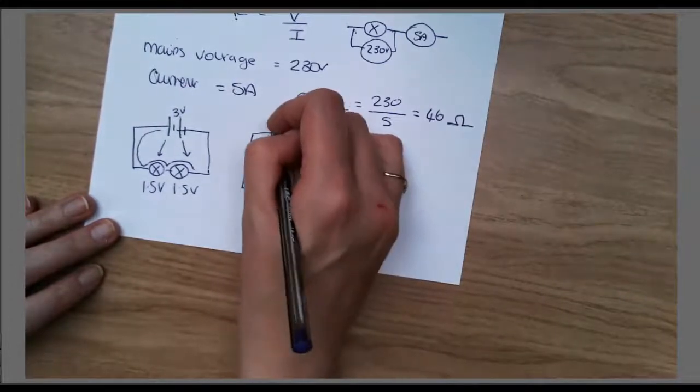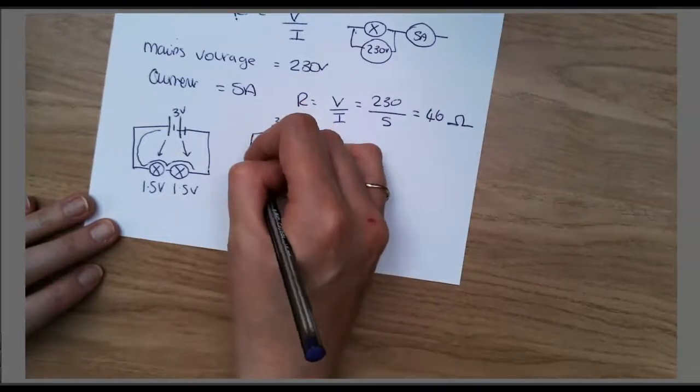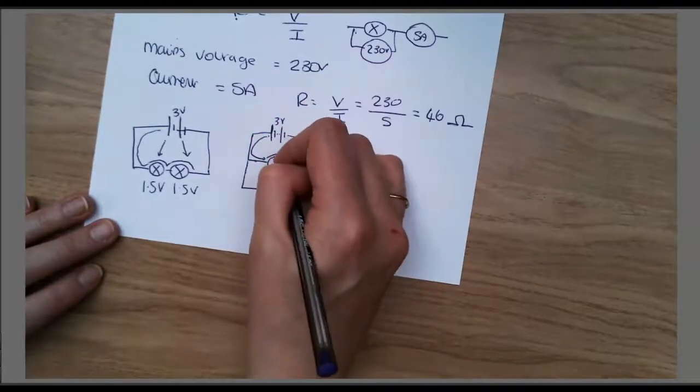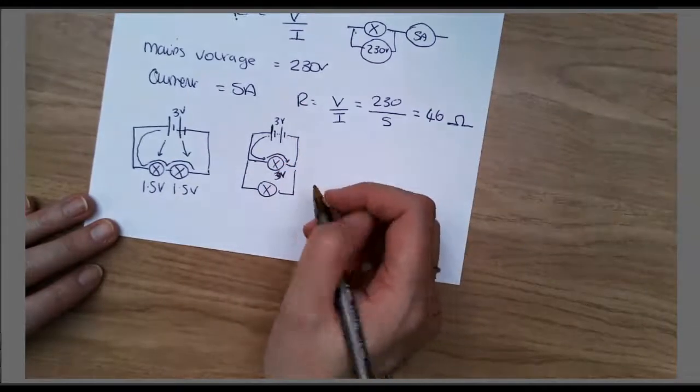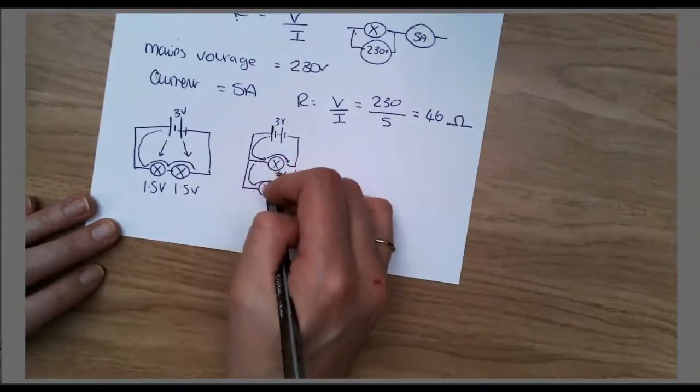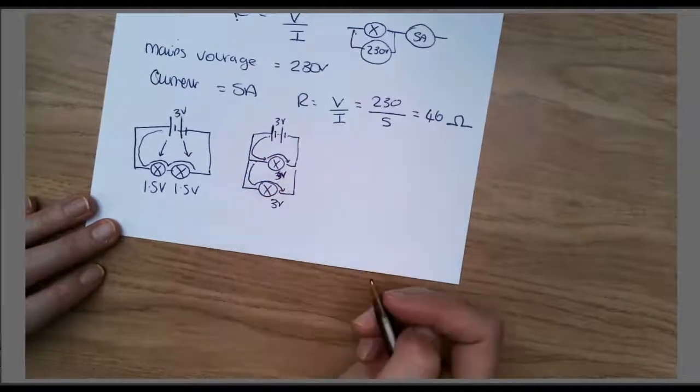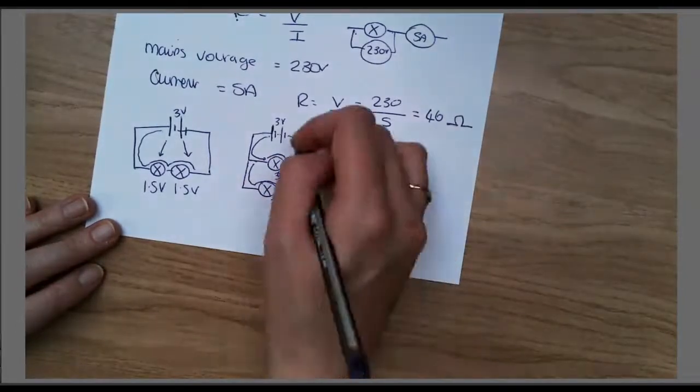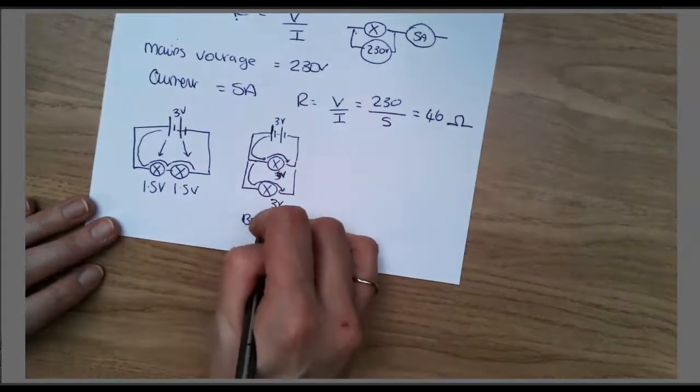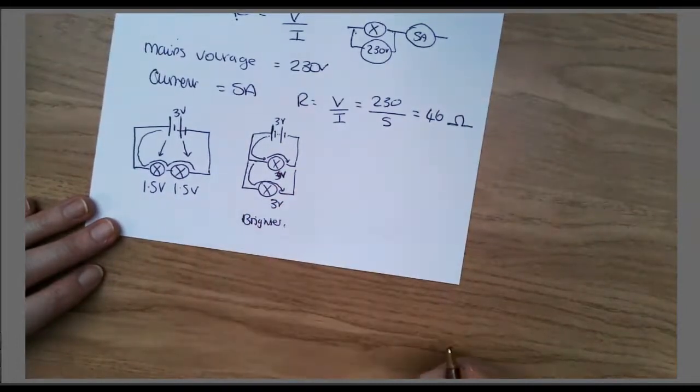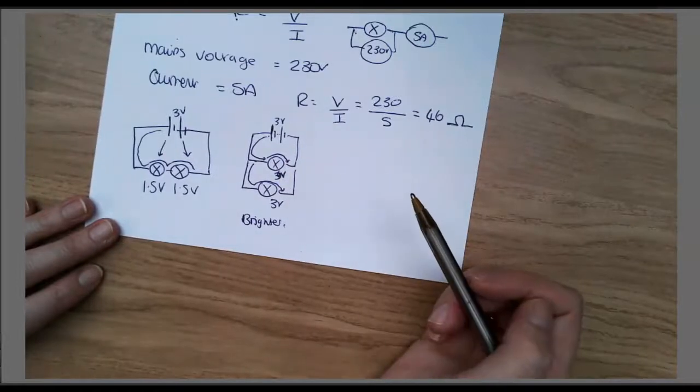If I put them in a parallel circuit where the bulbs are on top of each other, I've still got 3 volts here. The current that goes this way has only got one bulb to give its energy to, so that bulb gets 3 volts. The current that goes this way has only got one bulb to give it to too, so that bulb gets 3 volts. In this parallel circuit, both bulbs get 3 volts and it is brighter because they're getting more voltage, more energy.